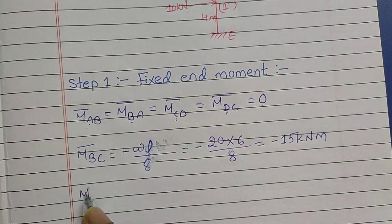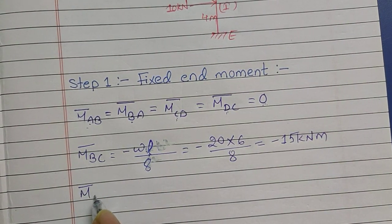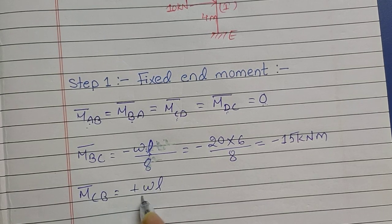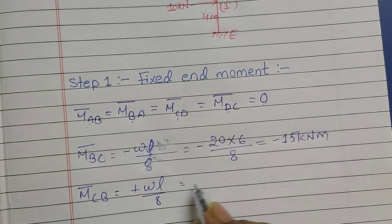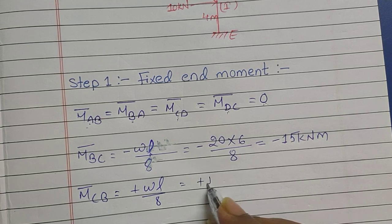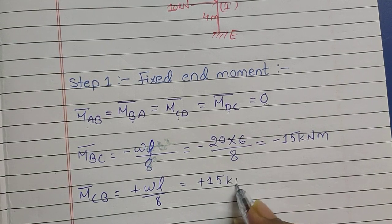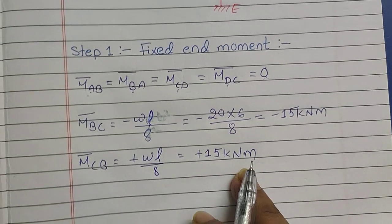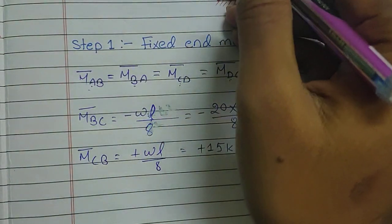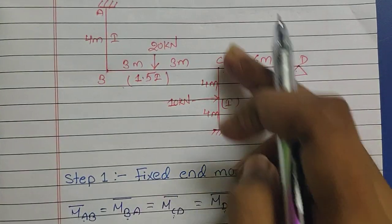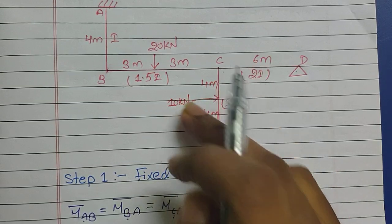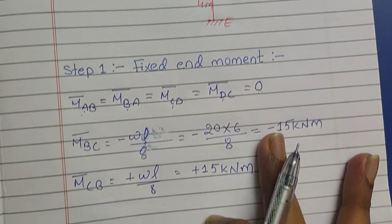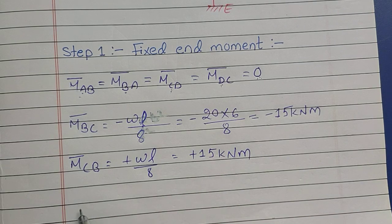Now we come to joint C. The fixed end moment at joint CB is going to be plus WL by 8, and it is going to be plus 15 kilonewton meter. Now we come to span CE, where a load of 10 kilonewton is acting at the center. We will be using the same formula for this span as well.